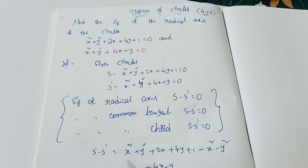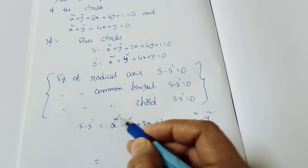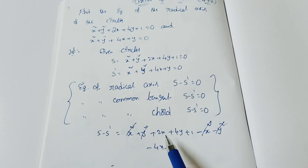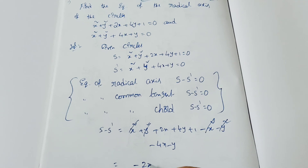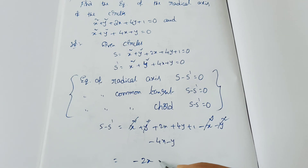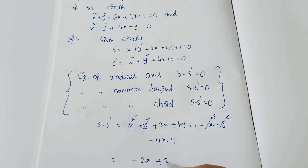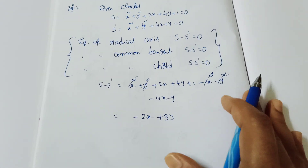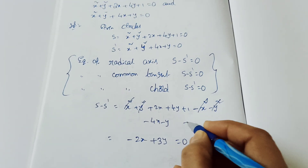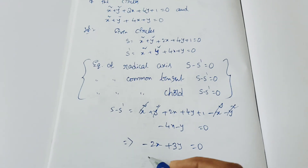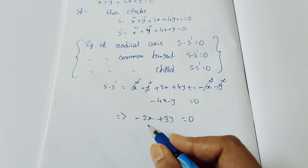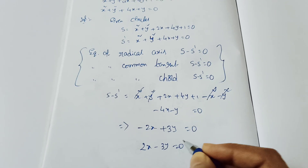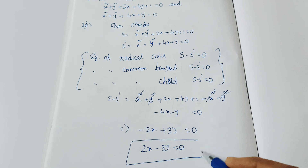So S minus S dash: x² minus x² cancels, y² minus y² cancels. For the x terms: 2x minus 4x gives minus 2x. For the y terms: 4y minus y gives plus 3y. The constant terms cancel too. Setting S minus S dash equal to 0, then taking minus 1 as common factor, we get 2x minus 3y equal to 0. This is the required equation.